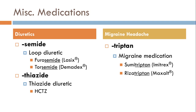Thiazide diuretics end in '-thiazide' — easy to figure out. They're a different class and work a little differently in the body. The key thiazide diuretic to know is hydrochlorothiazide, also written as HCTZ, because hydrochlorothiazide is too much to write out or say.